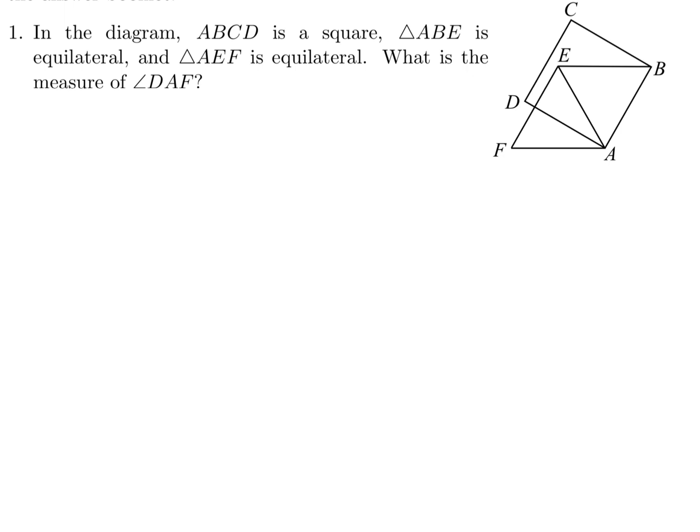In the diagram, ABCD is a square, ABE is equilateral, and triangle AEF is equilateral. What is the measure of angle DAF?